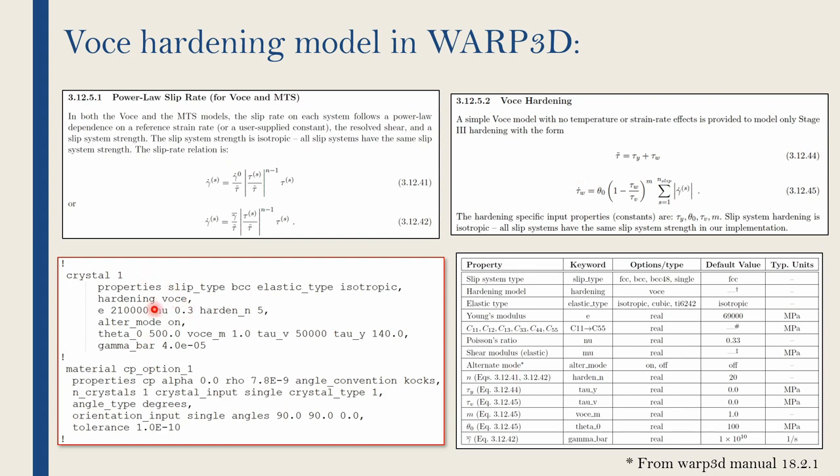Once you define crystal properties, you have to define a material. I am naming that material as CP_option 1. And here you will give some other properties of materials such as rho is its density. CP means it has crystal plasticity. So we have to define crystal over here. And crystal type 1 is nothing but this crystal type. You can define multiple crystals and multiple materials as well. And most importantly, crystal orientation is defined over here using Euler angles. In this example, we are not going to do homogenization. Therefore, crystal input is single. But WARP3D supports homogenization as well, which we will see in next videos.